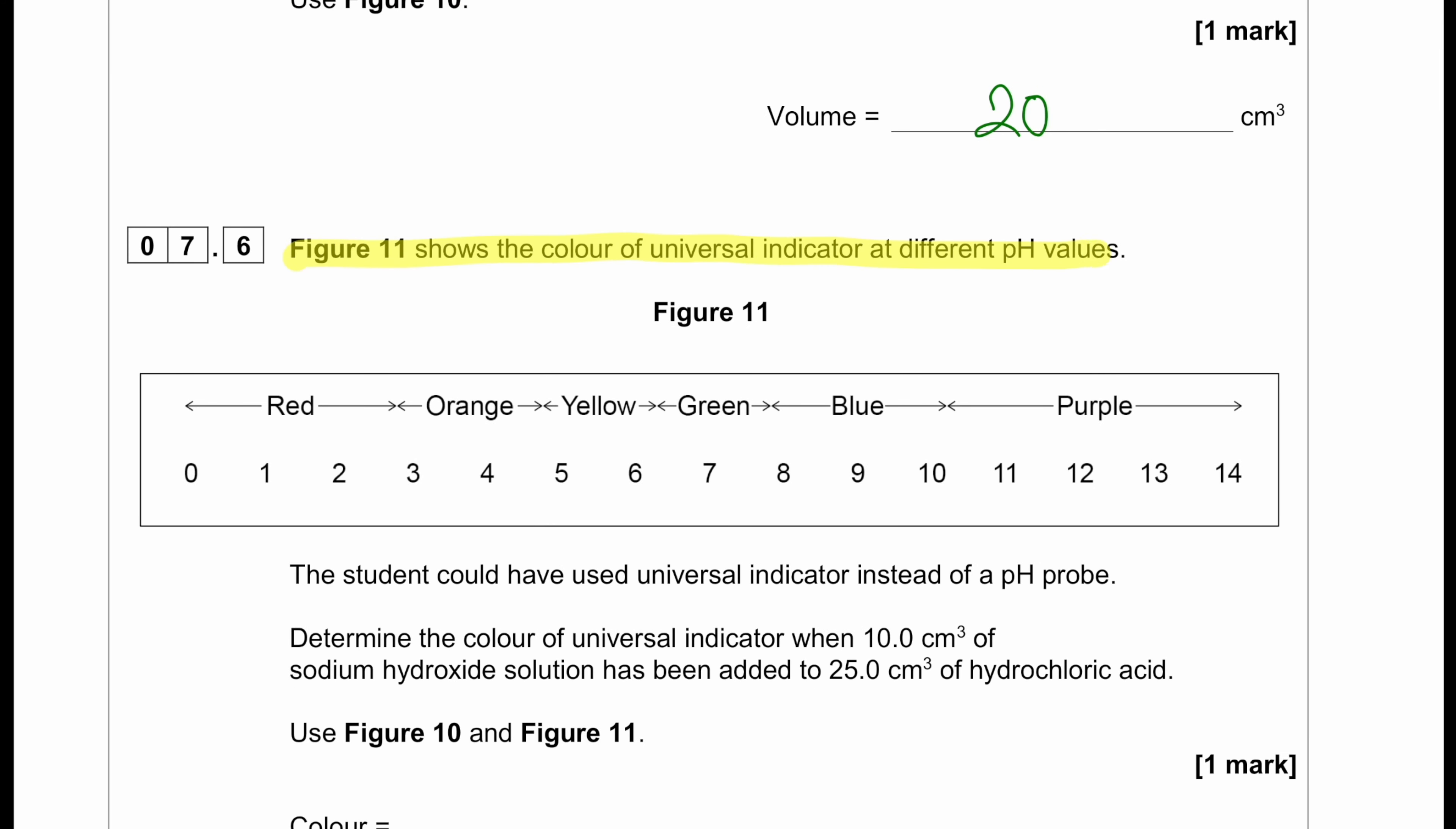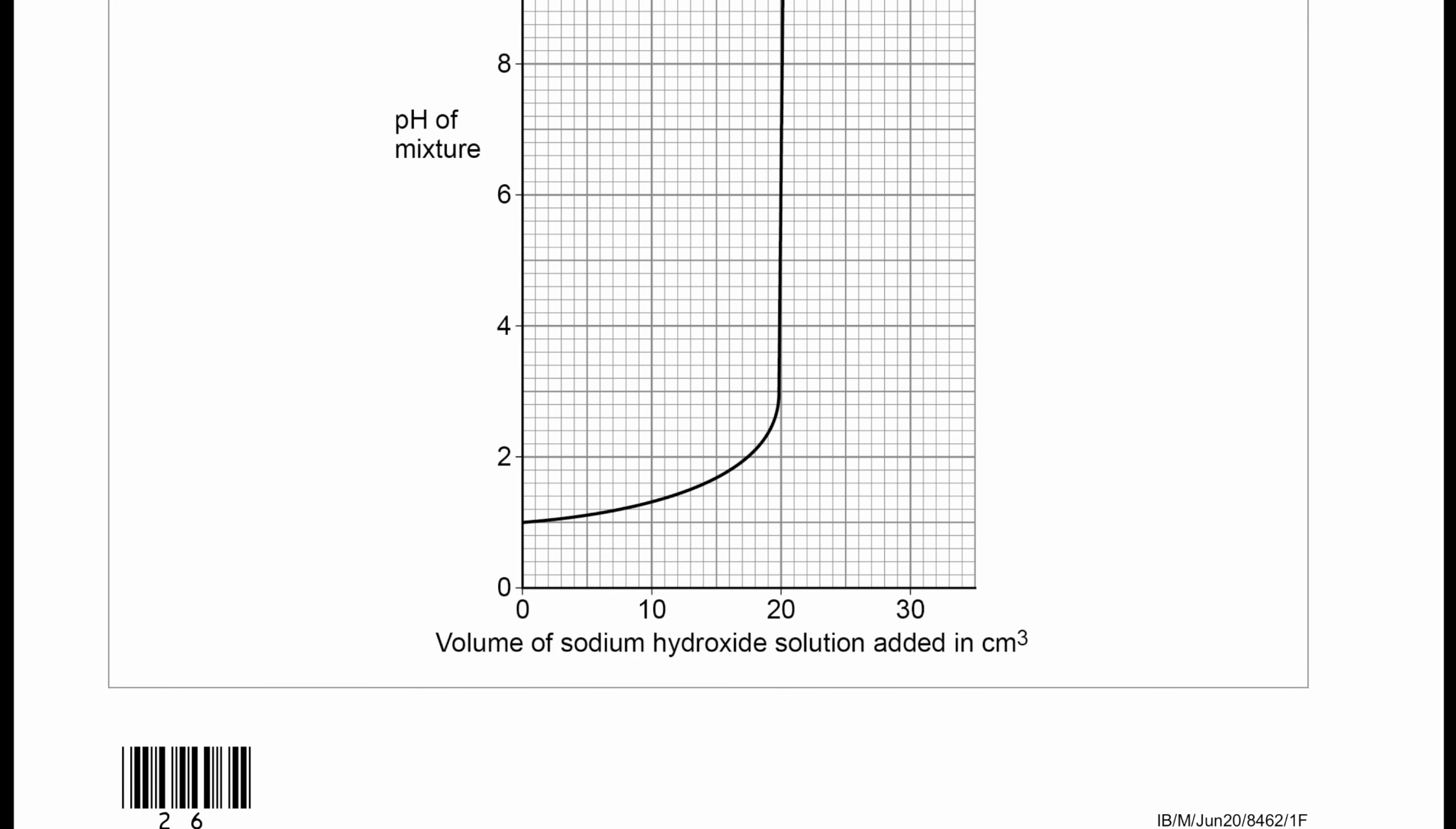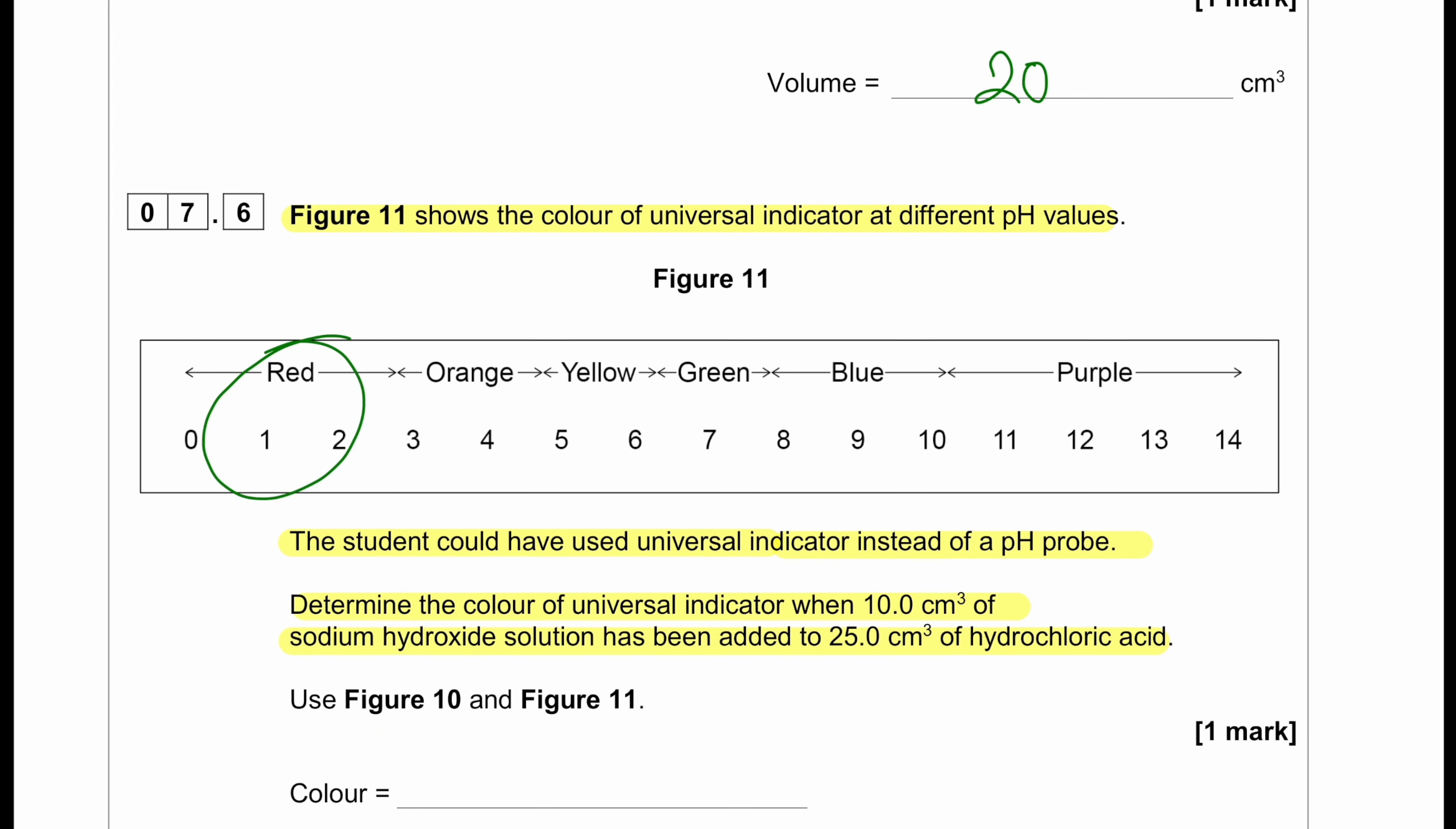Figure 11 shows the color of universal indicator at different pH values. The student could have used universal indicator instead of a pH probe. Determine the color of universal indicator when 10 cm³ of sodium hydroxide solution has been added to 25 cm³ of hydrochloric acid. To do this, we will have to determine what is the pH at that particular point of time. We can see the pH is close to 1.3. So at 1.3, we are going to see a red color.